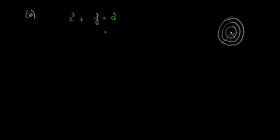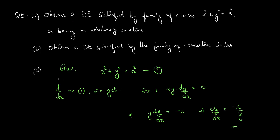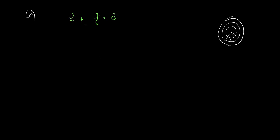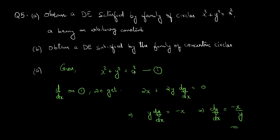If you have noticed, it is the same equation — the family of curves is the same, so part b and part a have the same equation. The answer will be the same: the steps for deriving the differential equation will be the same, giving dy by dx equals minus x by y. That is the solution to question 5, part a and part b.